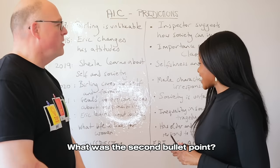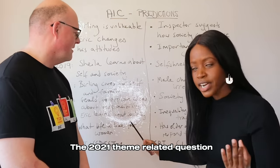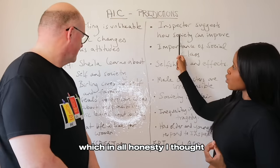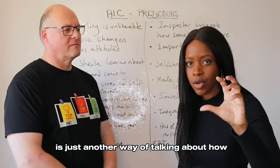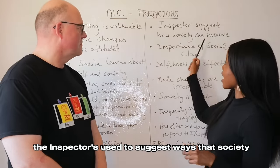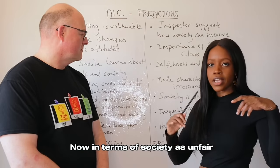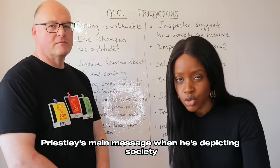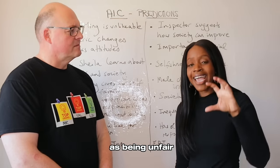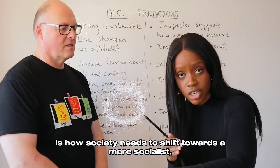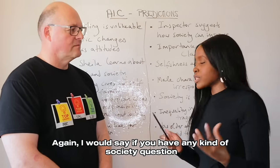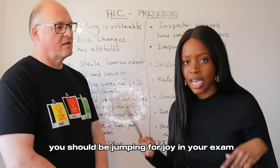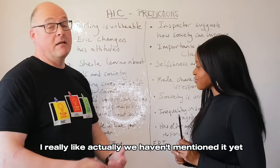The 2021 theme question was about how society is presented as unfair — essentially another version of how the Inspector is used to suggest ways society can improve. When you talk about society being unfair, you can cover all the main themes within the play. Priestley's main message when depicting society as unfair is that society needs to shift towards a more socialist and more equal society. If you have any kind of society or class question, there is so much you can talk about.